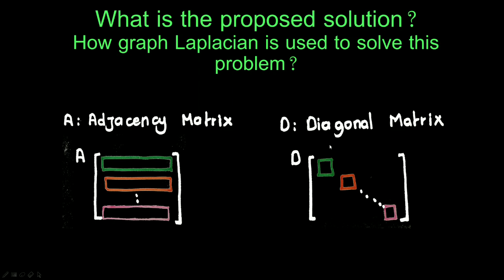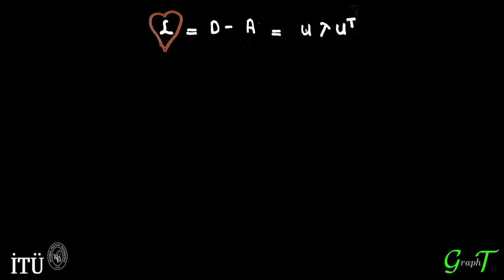So how can we calculate the diffusion pattern? First, the diagonal matrix is calculated from adjacency matrix. So in matrix D, we have degrees for each node. In the next step, the Laplacian graph is created by subtraction of A from D.